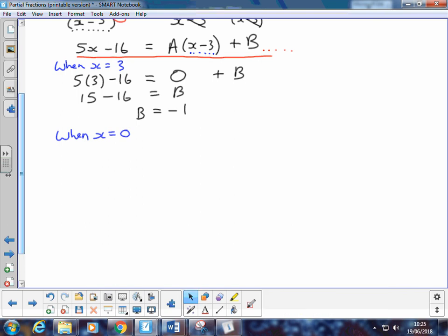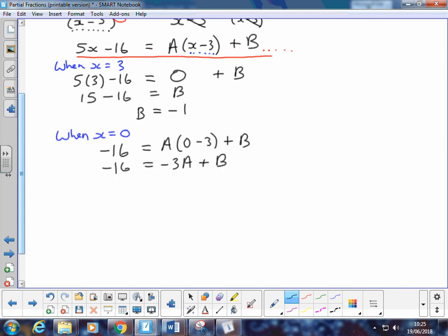So when x is 0, what have I got on the left-hand side? 5x goes to 0, so I've just got negative 16 is equal to A times (0 - 3) plus B. So simplifying that, I end up with an equation: negative 16 equals negative 3A plus B. That would normally be no good for us, but we already know that B is negative 1. So we can substitute negative 1 in for B.